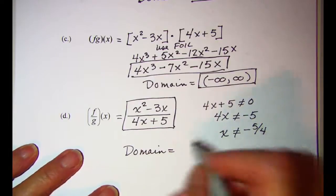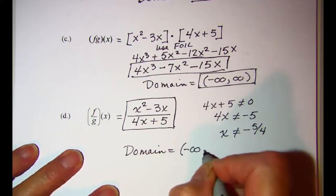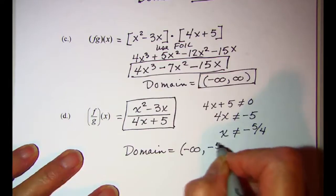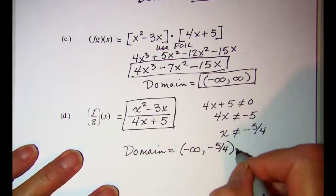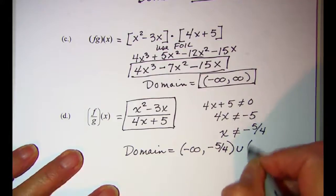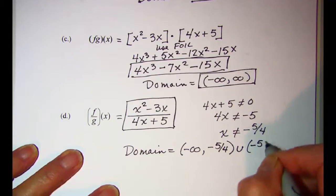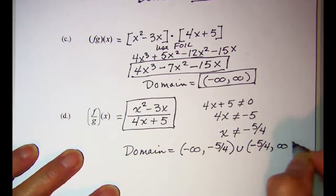So our domain is all real numbers except negative five fourths. So we'll start at negative infinity and go up to negative five fourths, don't include that in the domain, union with negative five fourths up to positive infinity.